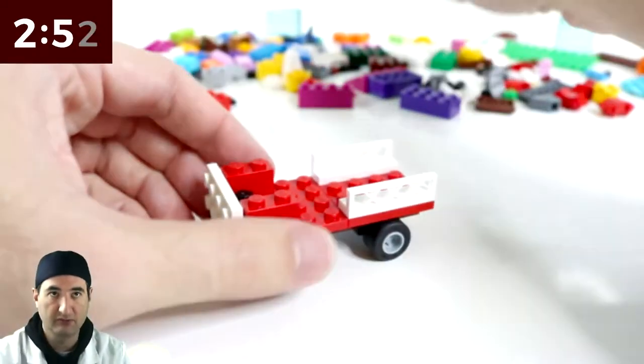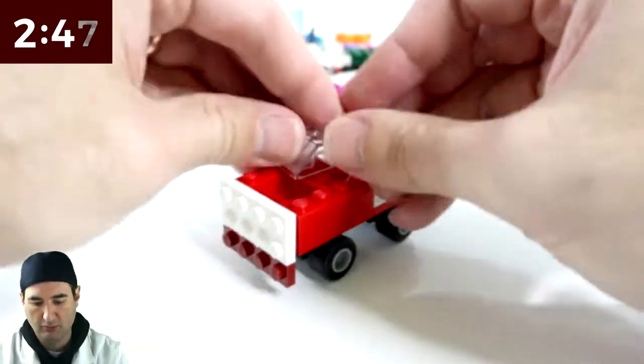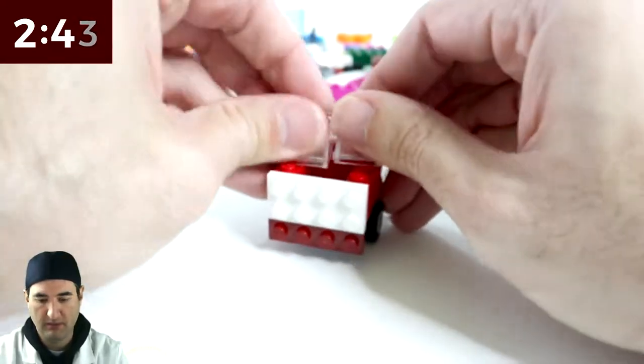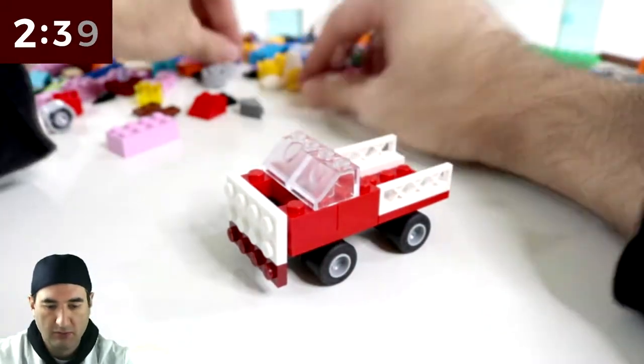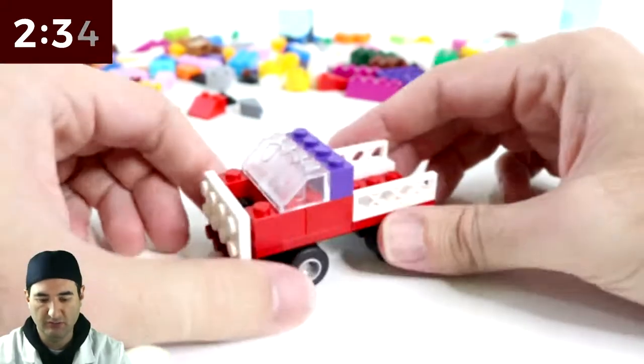Look, we're doing OK. We got a red truck going on here. Yeah, something like that. And then let me use purple for the back windows here. OK, so there we go. We got a truck.